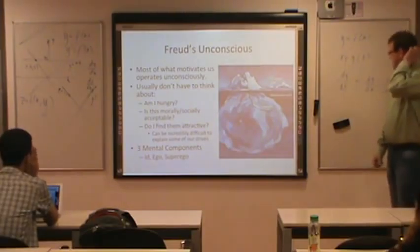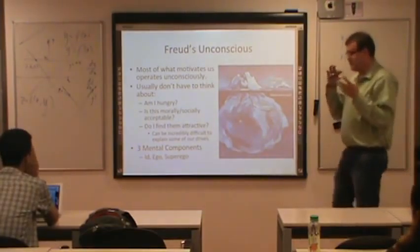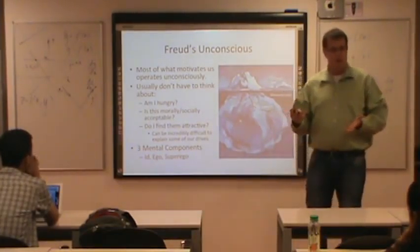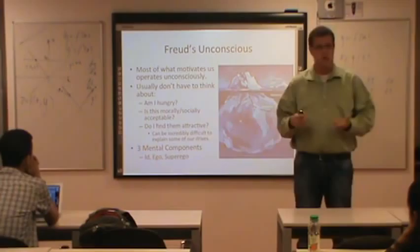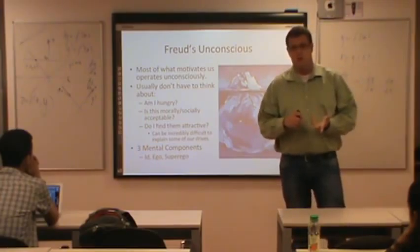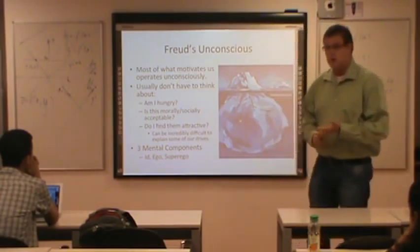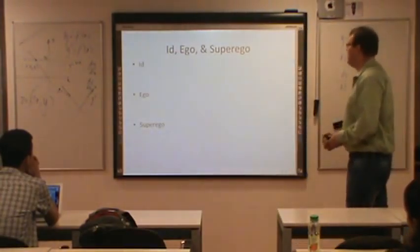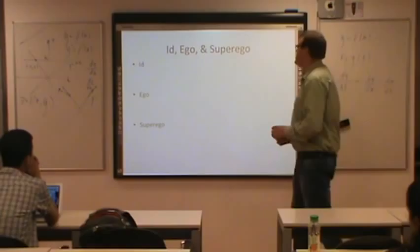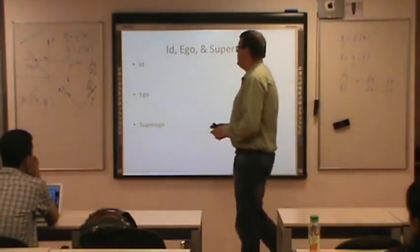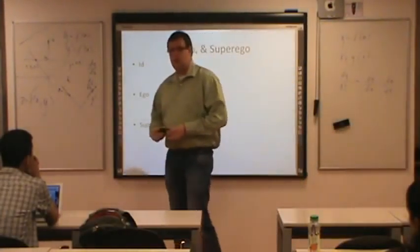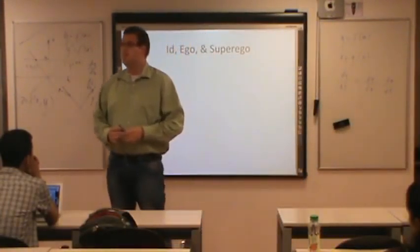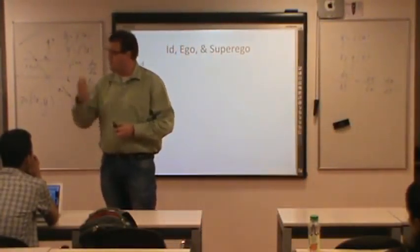So Freud divided the psyche — the mind — into three different components: the id, the ego, and the superego. What is the id? It's a basic drive. It's like hunger.